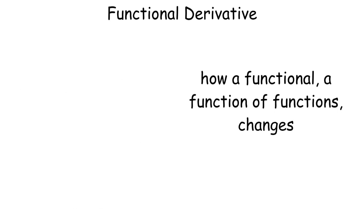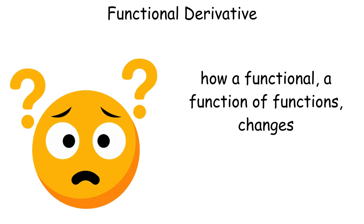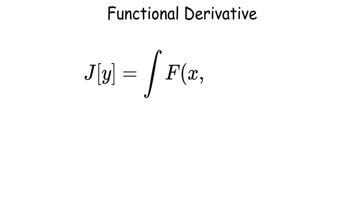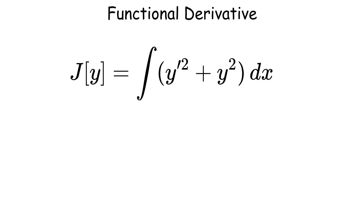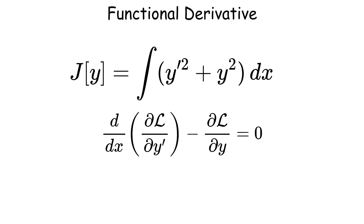The functional derivative measures how a functional — a function of functions — changes with respect to its input function. For a functional J of y equals the integral of f of x, y, y prime dx, the functional derivative is given by delta J. For example, for J of y equals the integral of y prime squared plus y squared dx, the functional derivative yields the Euler-Lagrange equation, leading to y double prime equals y. This is fundamental in physics and optimization.